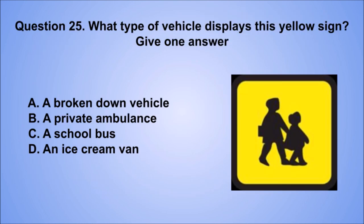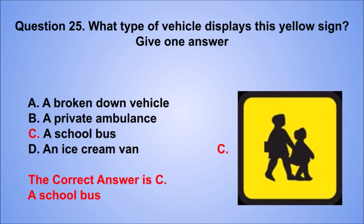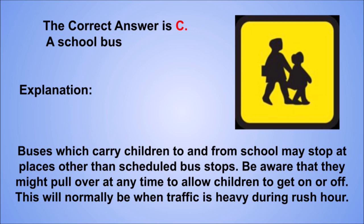Question 25. What type of vehicle displays this yellow sign? Give one answer. A. A broken down vehicle. B. A private ambulance. C. A school bus. D. An ice cream van. The correct answer is C, a school bus. Buses which carry children to and from school may stop at places other than scheduled bus stops. Be aware that they might pull over at any time to allow children to get on or off. This will normally be when traffic is heavy during rush hour.